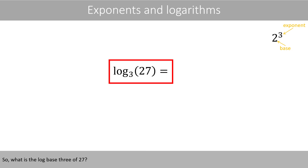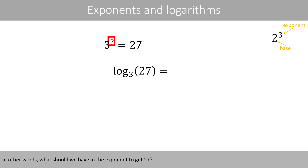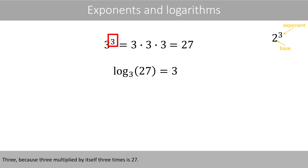What is the log base 3 of 27? In other words, what should we have in the exponent to get 27? 3, because 3 multiplied by itself 3 times is 27. The log of 27 with base 3 is therefore equal to 3.